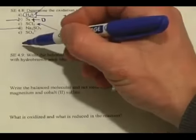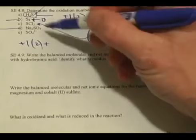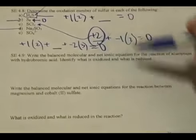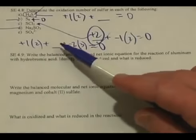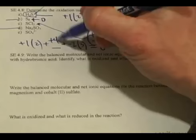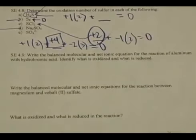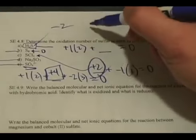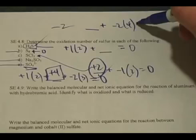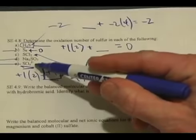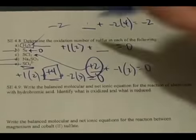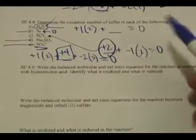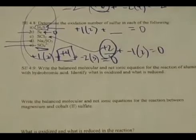Let's also find sulfur's oxidation number in SO₄²⁻. Sulfur we don't know; oxygen is minus two and there are four of them. It must sum to negative two because that's the charge on the ion. So something plus negative eight equals negative two — sulfur must be positive six. We've now seen sulfur be negative two, zero, positive two, positive four, and positive six. Sulfur can be any of those oxidation numbers depending on what it is combined with.